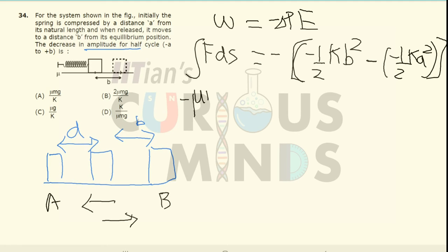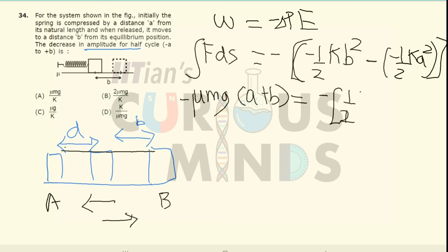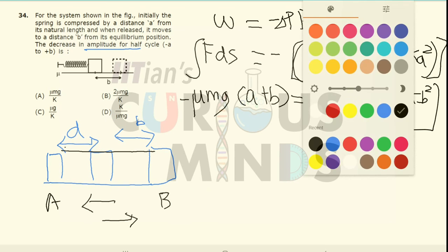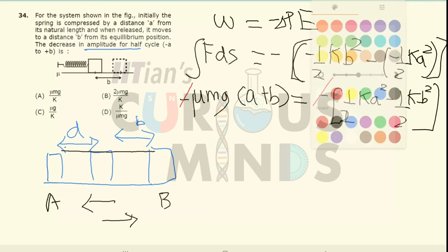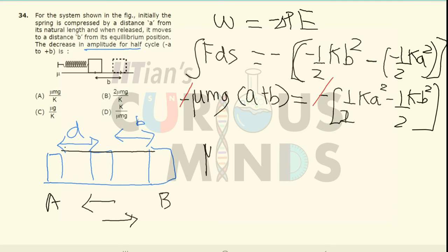The work done by friction equals force times displacement, which is equal to minus μmg times (a + b), since the total displacement over half a cycle is (a + b). Setting this equal to the potential energy difference gives: half k·a² minus half k·b². The negative signs cancel out, giving μmg(a + b).